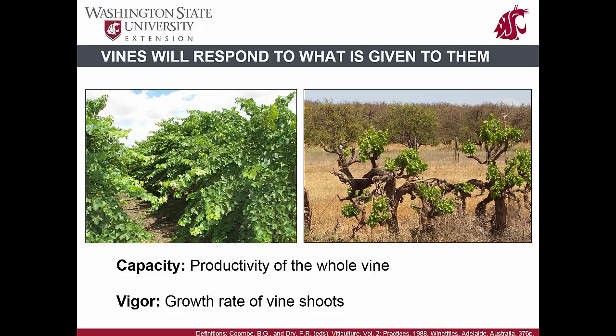A classic example of this is pictured here. Both of these vines are the same cultivar and the same age and growing within approximately half a mile of each other. The one on the left, however, has had excess water applied to it, and the one on the right is an unfortunate victim of a 10-year drought with no irrigation. Both have the same potential capacity but have very different amounts of resources supplied to them. Each vine grew to the capacity limited by their resources.